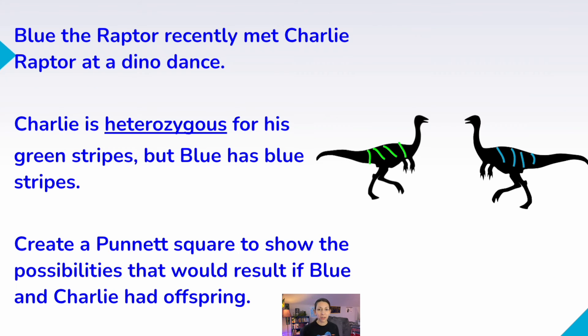All right, let's put it all together with some Punnett squares. Blue the raptor met Charlie raptor at a dino dance. All hypothetical here. Of course, in the Jurassic Park movies, they're all females. So this doesn't make any sense, but we're just going to pretend. Charlie is heterozygous for his green stripes, but Blue has blue stripes. Create a Punnett square to show the possibilities that would result if Blue and Charlie had offspring. Go ahead and take out some scratch paper and try it on your own and pause the video and then hit play when you're ready for the answer.